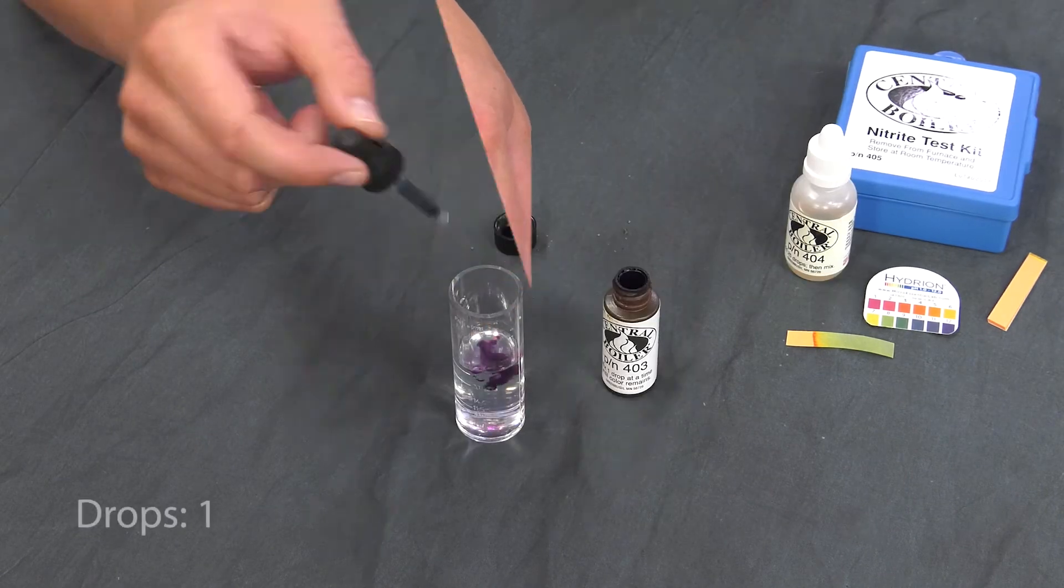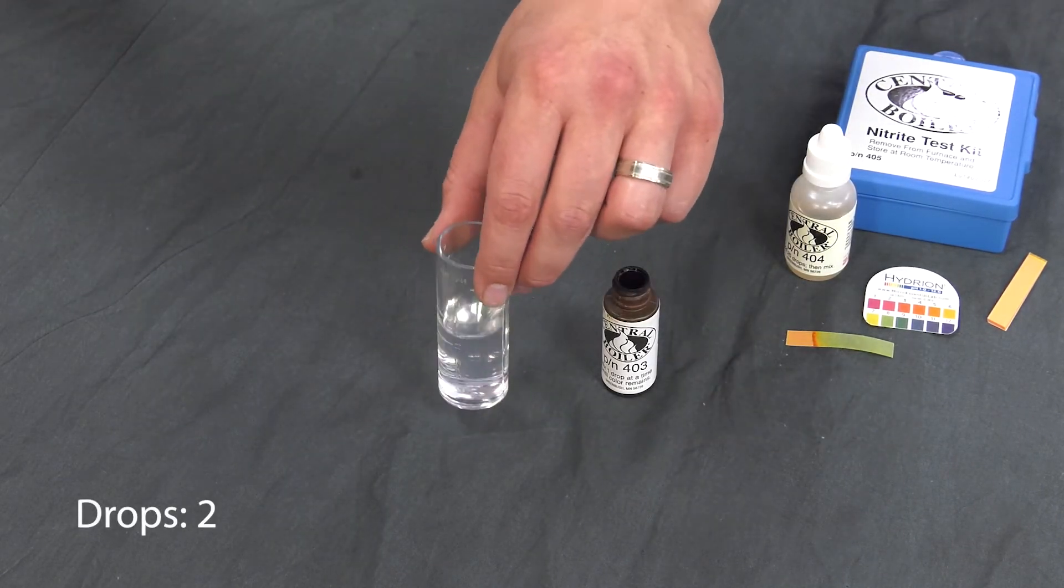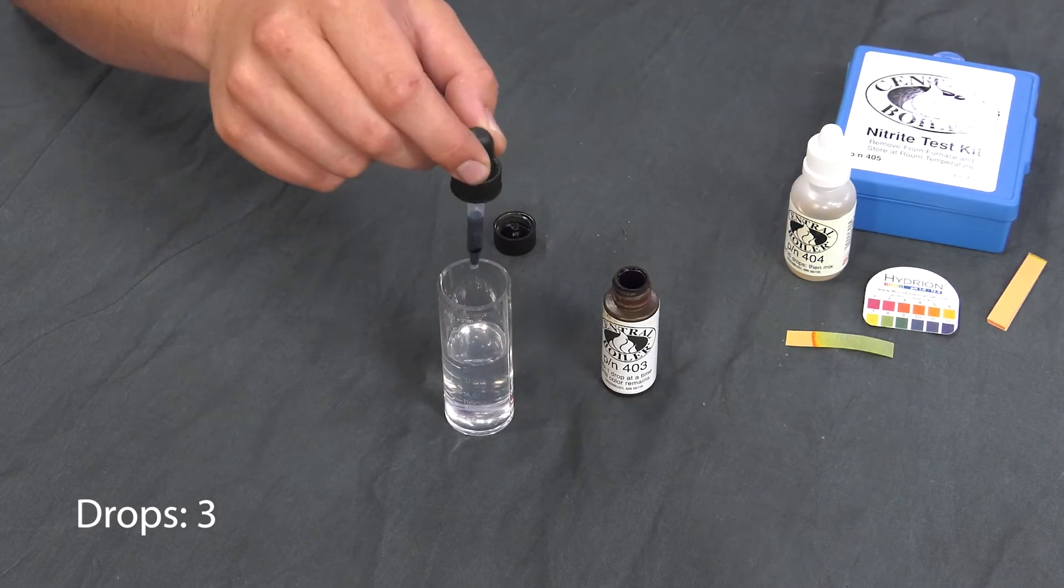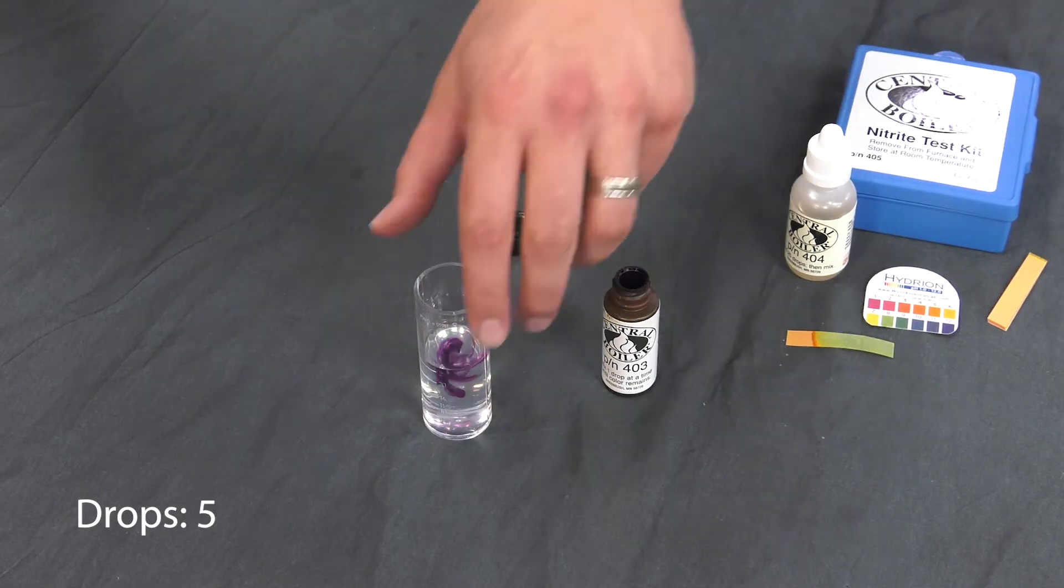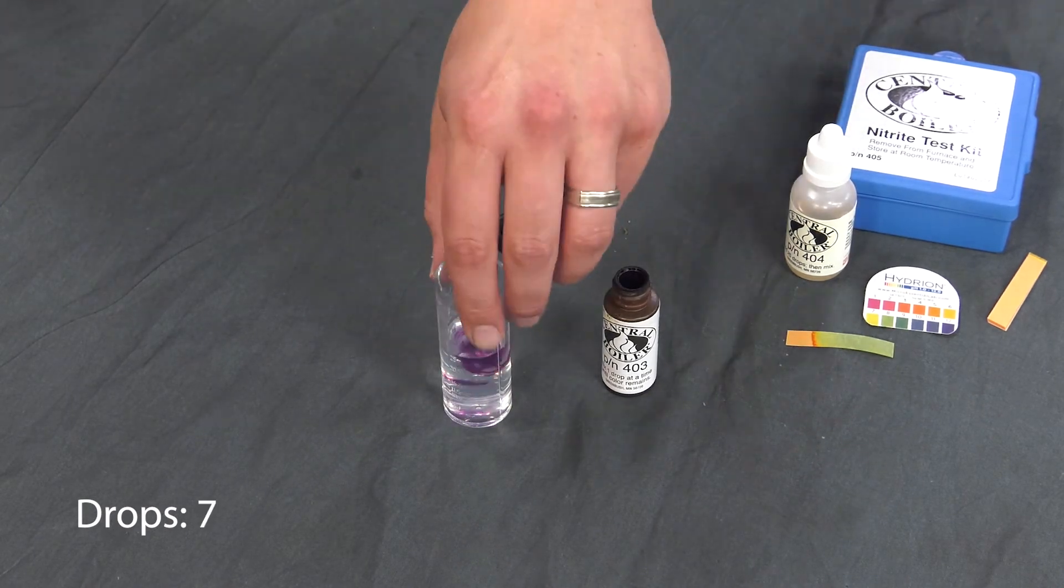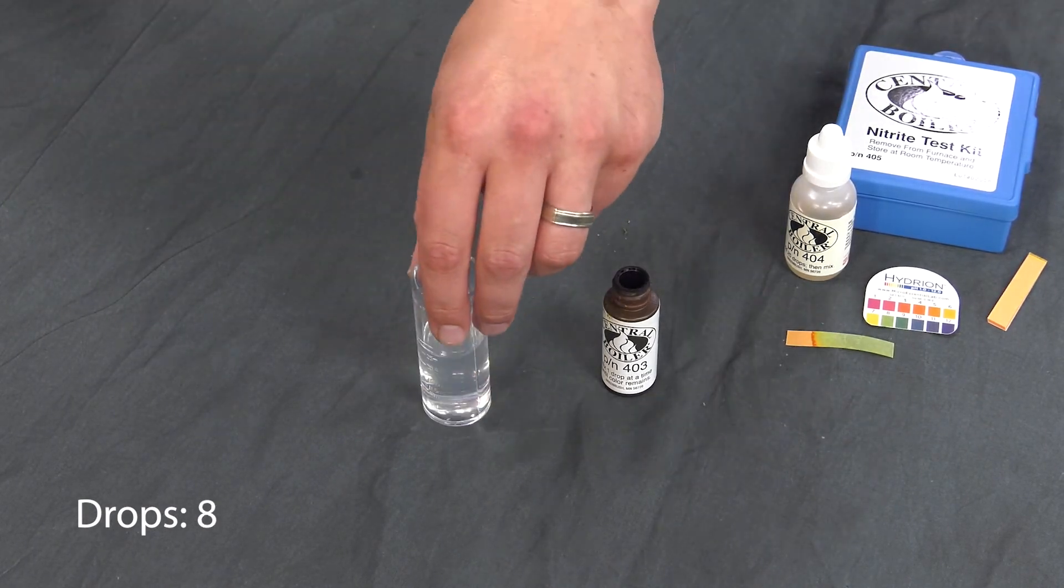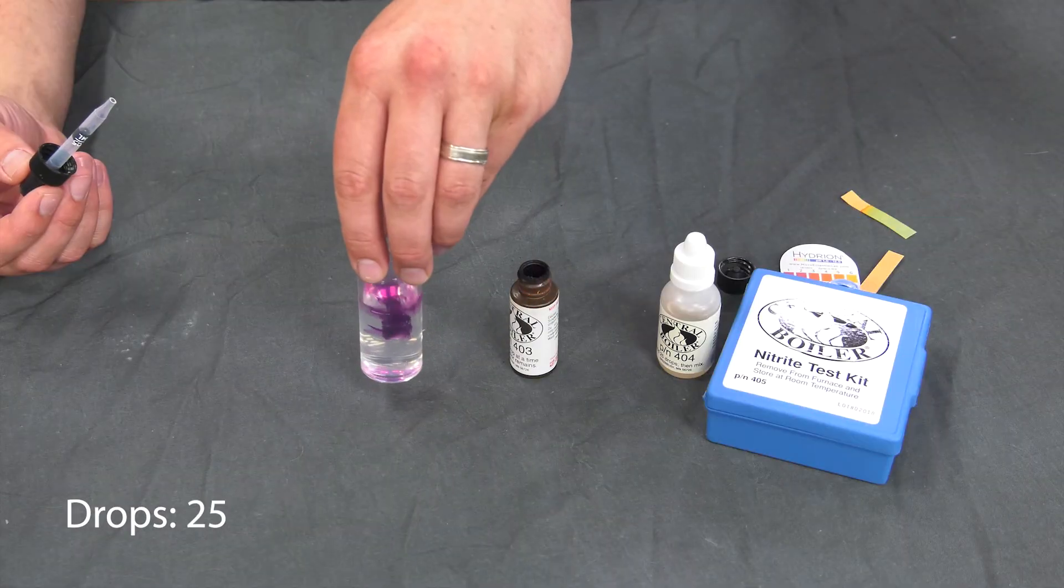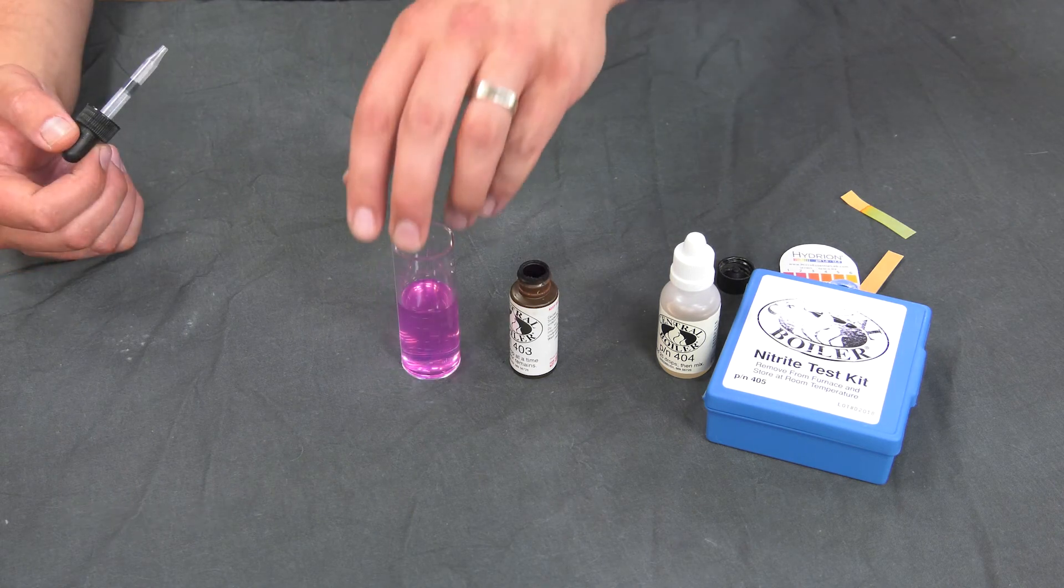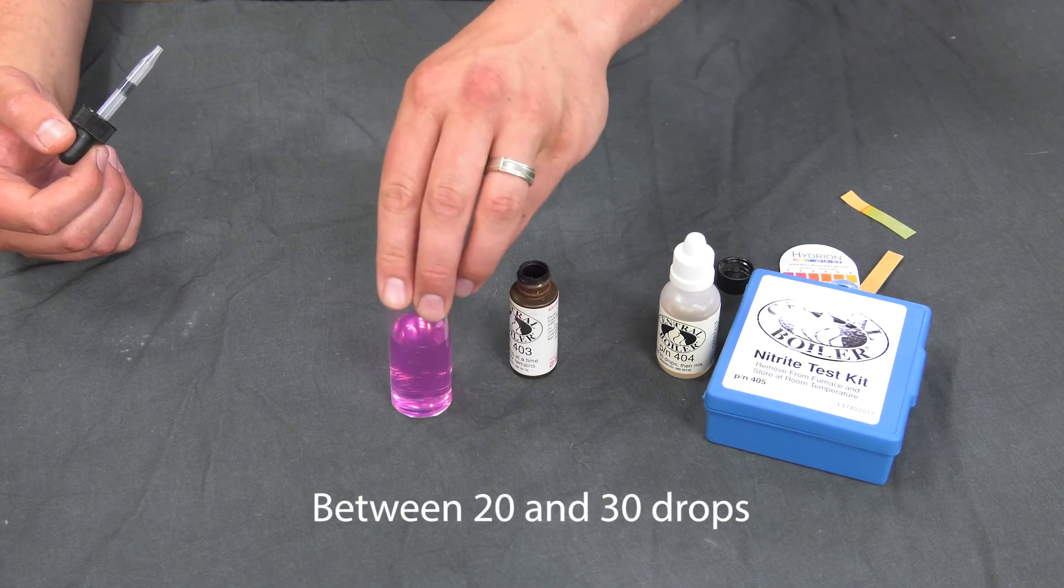Using the dropper from the test kit, add permanganate reagent, part number 403, one drop at a time, always holding the dropper in a vertical position. Swirl the water after each drop and count each drop until the color changes to a faint pink that persists for at least one minute. This should occur between 20 and 30 drops.